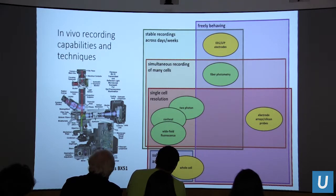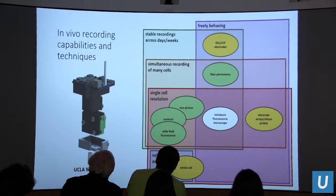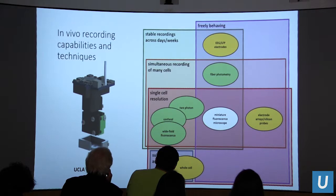Conveniently, there's an open spot in the middle of this chart where our project fits in. We design miniature fluorescent microscopes that can be worn on the head of a mouse. They're about three grams in weight and allow us to record neural activity from individual neurons across hundreds of neurons simultaneously while the animals are awake and freely behaving, performing behavioral tasks in an array of different environments.